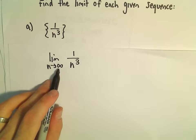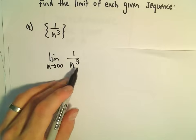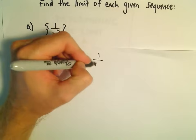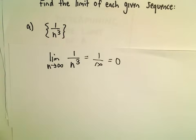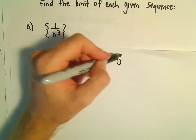we just take the limit as n goes to infinity of 1 over n cubed. As n gets really big, the denominator is going to get really big. We're going to have 1 over a very big number. So 1 over a large number gets arbitrarily close to 0. So the limit of the following would just simply equal 0.